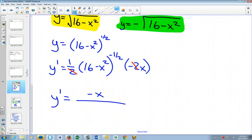This 16 minus x squared to the 1 half could be moved down to the bottom of the equation. And it could be written as a square root, as 16 minus x squared.